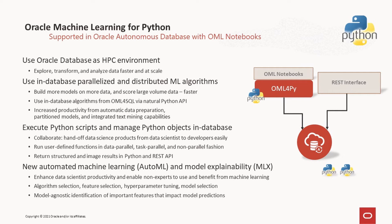Results from these user-defined functions can contain both structured and image results, and be accessed via Python and REST APIs. Oracle Machine Learning for Python also supports Automatic Machine Learning, or AutoML, which not only enhances data scientists' productivity but also enables non-experts to use and benefit from machine learning. AutoML can help produce more accurate models faster through automatic algorithm and feature selection and model tuning and selection. In addition, Model Explainability, or MLX, provides model-agnostic identification of important features impacting model predictions. AutoML and MLX are core technologies developed by Oracle Labs.